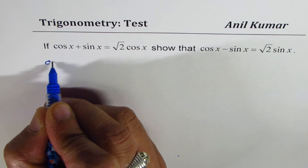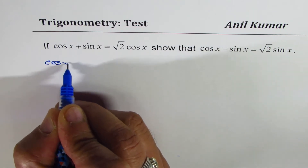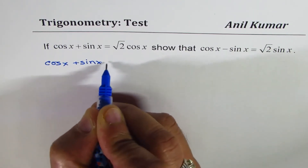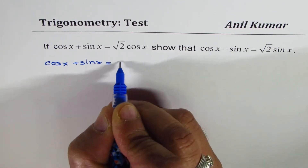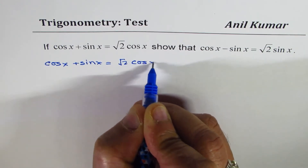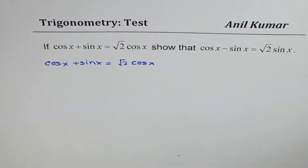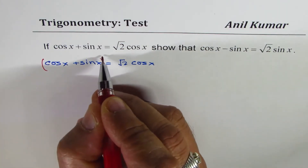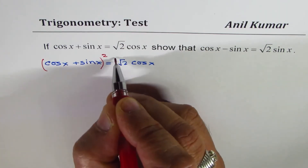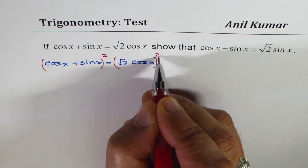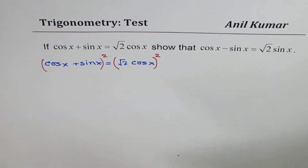We are given cos x plus sin x equals square root 2 cos x. So if I square both sides, let's do it and check what happens.